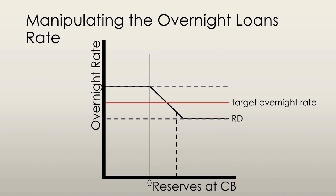Conversely, if the overnight loans rate is lower than the target rate, the central bank sells government securities. Commercial banks pay for these securities with their reserves, thus decreasing the amount of their reserves. This raises the overnight loans rate to the target rate.